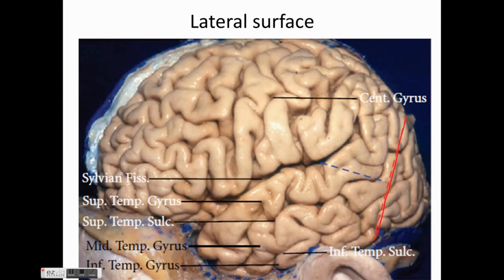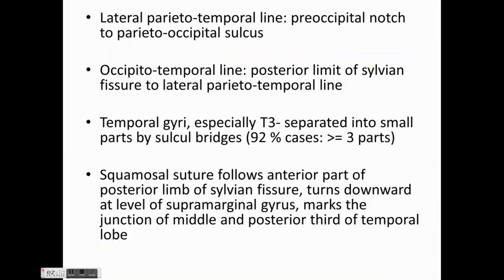The line separating the temporal lobe from the occipital lobe is the lateral parietotemporal line, and the line from the continuation of the sylvian fissure differentiates it from the parietal lobe. So the parietal lobe line is known as the occipital temporal line, and the line which separates the temporal lobe from the occipital lobe is known as the lateral parietotemporal line.